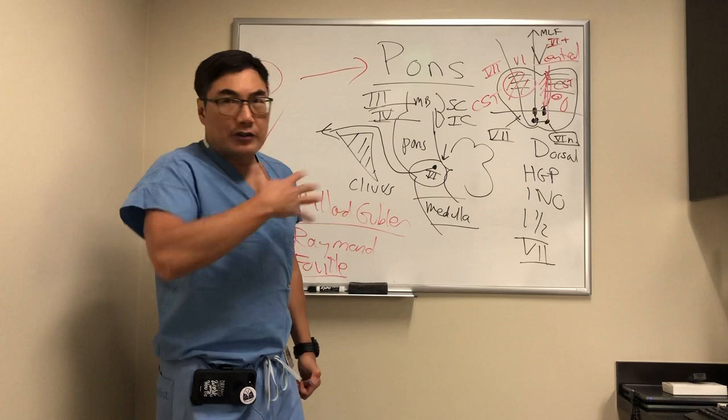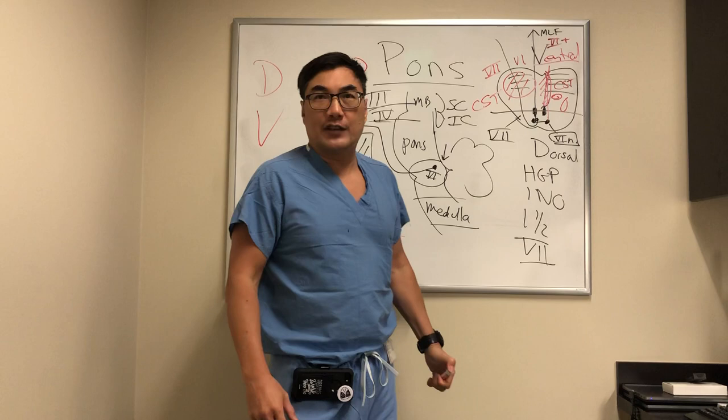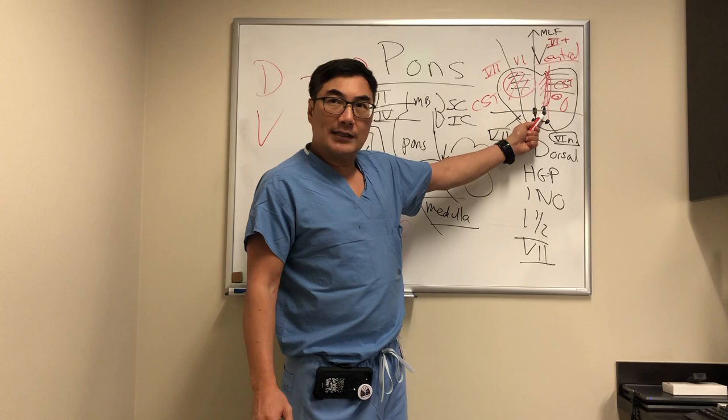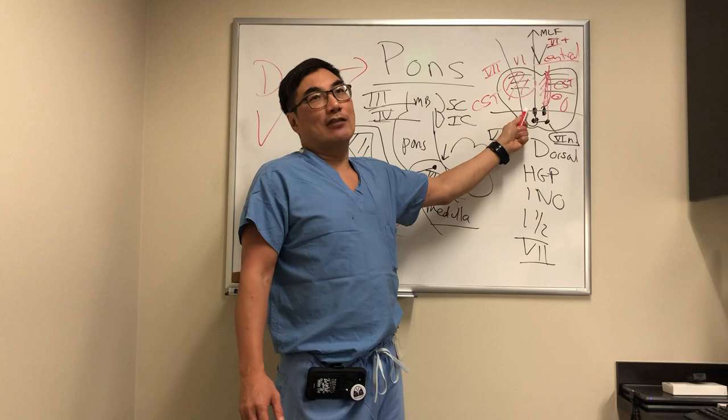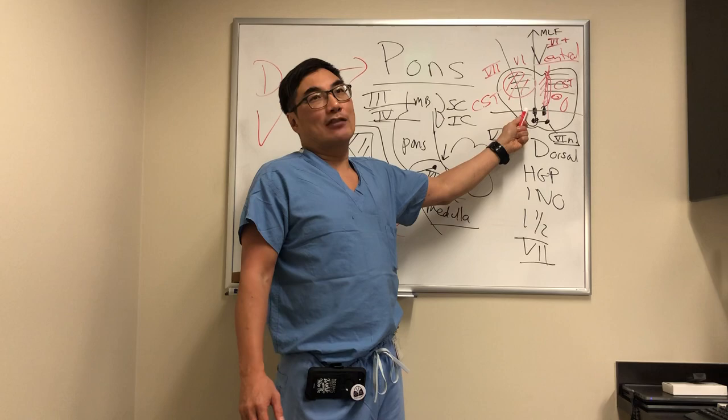There are other pontine syndromes — like locked-in syndrome or pure sensory versions — which go to neurology. The ones that come to neuro-ophthalmology are the dorsal pontine syndromes involving the nucleus, the fascicle, or the MLF, and the ventral ones when they involve the sixth nerve. We really don't see the far lateral ones because those don't present with double vision. We only see the ones that knock out the MLF, the sixth nerve fascicle, or its nucleus.